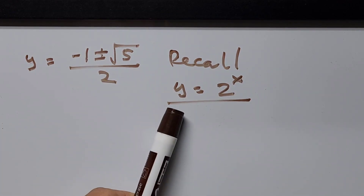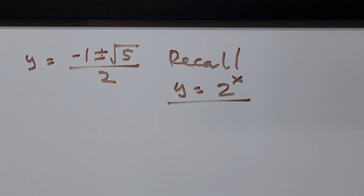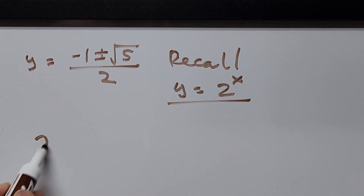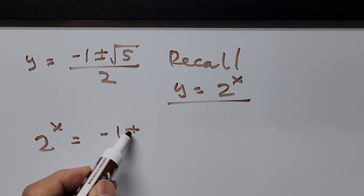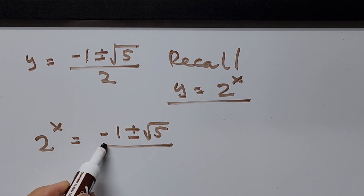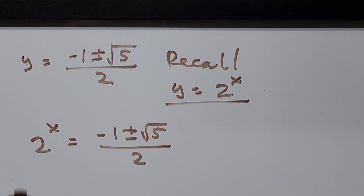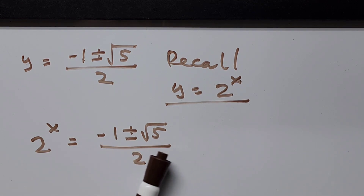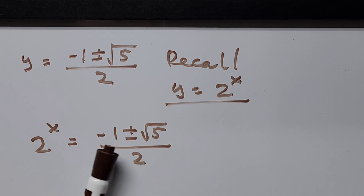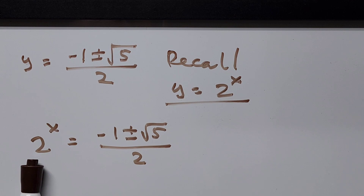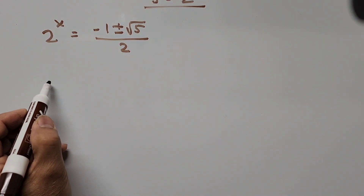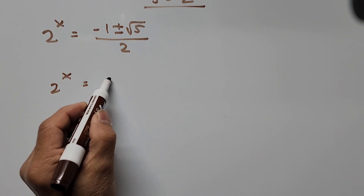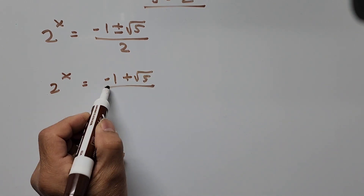We've found the value of y. Recalling that y equals 2 to the power of x, we substitute: 2 to the power of x equals negative 1 plus or minus the square root of 5, all divided by 2. Now, 2 to the power of x must be a positive value, so we take only the positive root. Therefore, 2 to the power of x equals negative 1 plus the square root of 5, divided by 2.